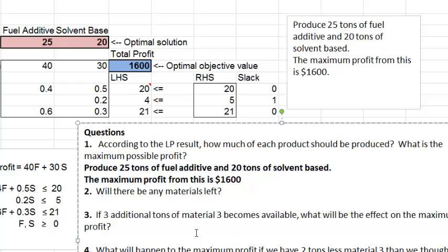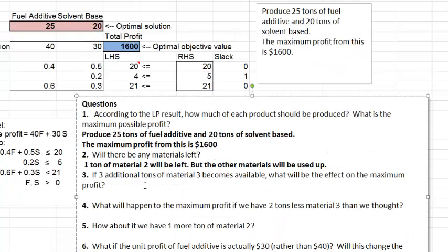Okay, well, second question, will there be any materials left? So if you do this, any materials left, well, we could answer that by looking at the slack. There is one ton of material two left, and we could see it from here, four tons are being used out of the five tons. So here we would say one ton of material two will be left, but then the others, you could see, but then the other materials are used up.